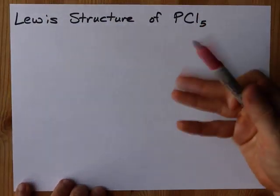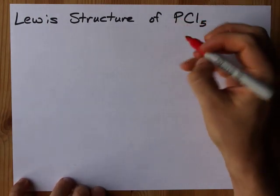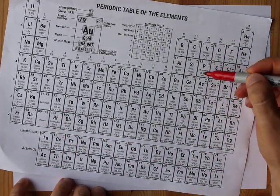Starting with phosphorus though, the octet rule kind of goes out the window. Let's do this. How many valence electrons does phosphorus bring? The answer is five because it is in group 15. That's group 15.